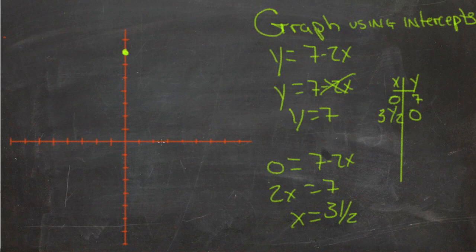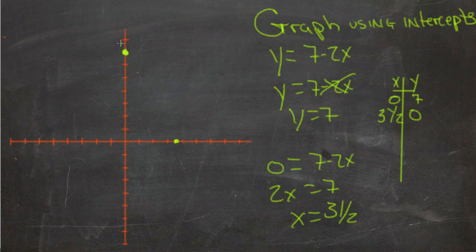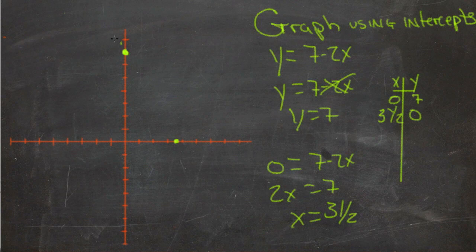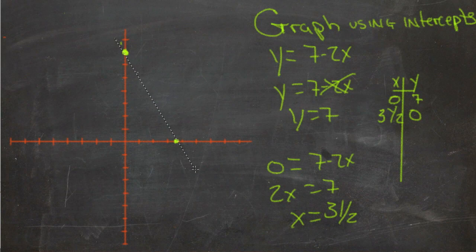And x is 1, 2, 3 and a half. So that line should look something like this. I'm just going to have to kind of guess here. Yeah, something like that.